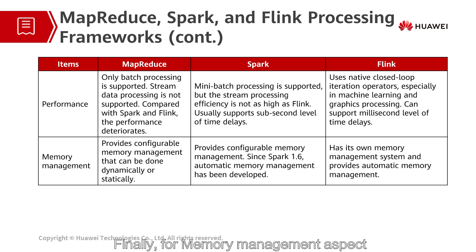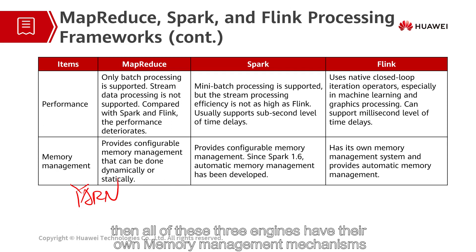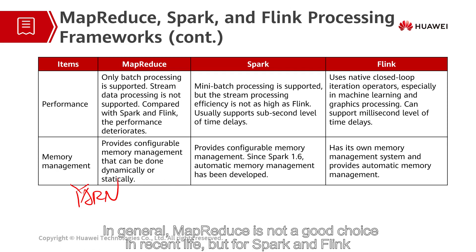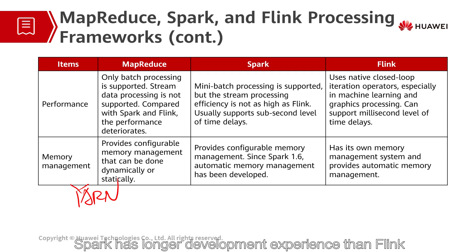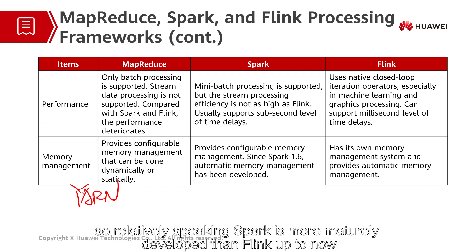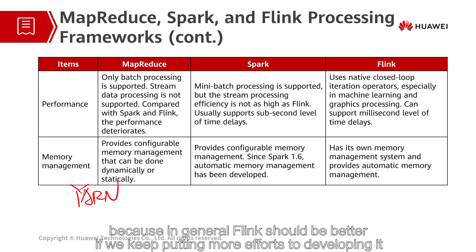Finally, for memory management, it is recommended to use JVM for memory management for all three engines. But in some cases, if we do not want JVM, then all three engines have their own memory management mechanisms. In general, MapReduce is not a good choice nowadays. For Spark and Flink, it depends on your business and preferences. Spark has longer development experience and is more maturely developed than Flink up to now. However, we can expect a better future for Flink, because in general Flink should be better if we keep putting more effort into developing it.